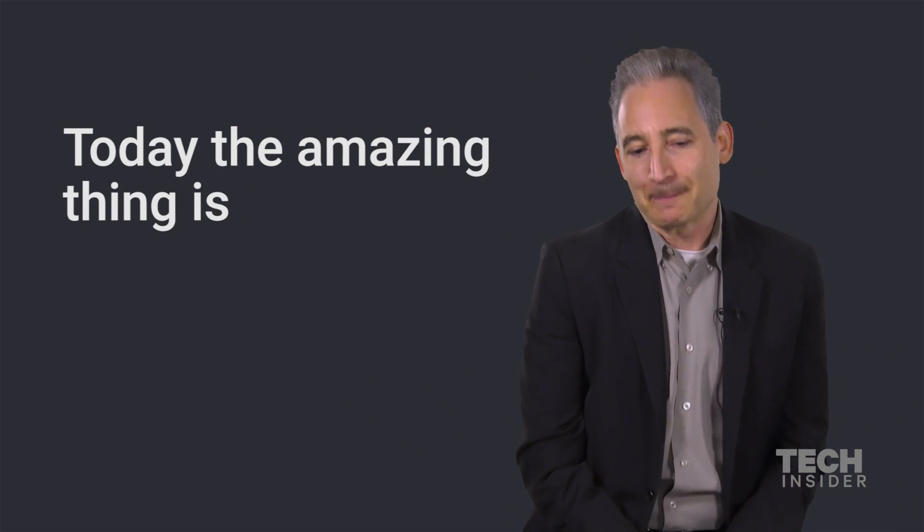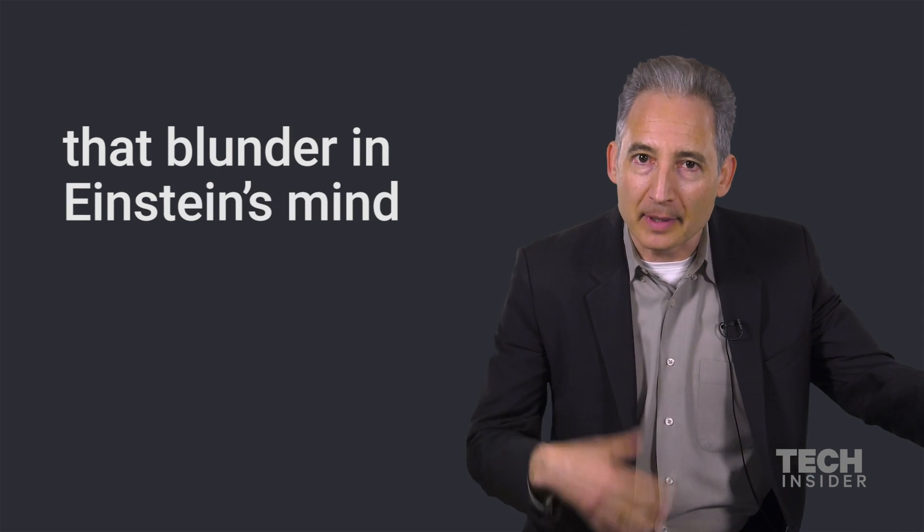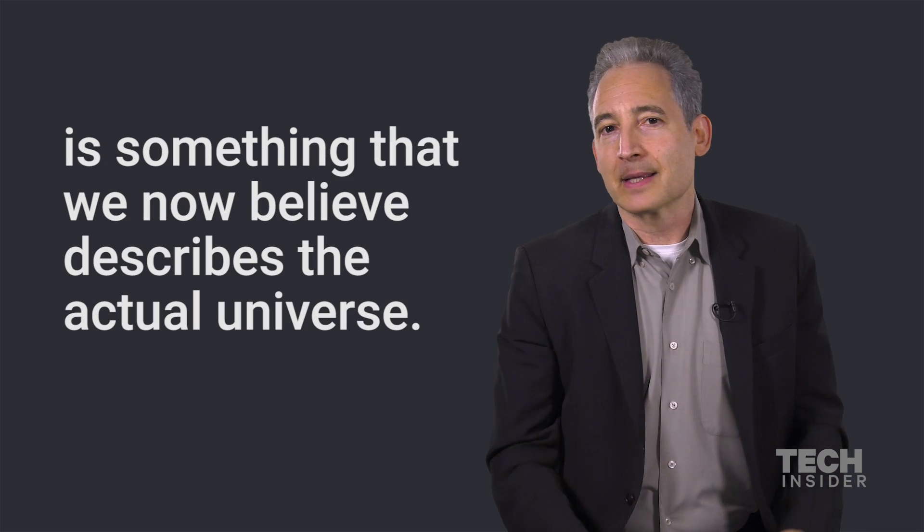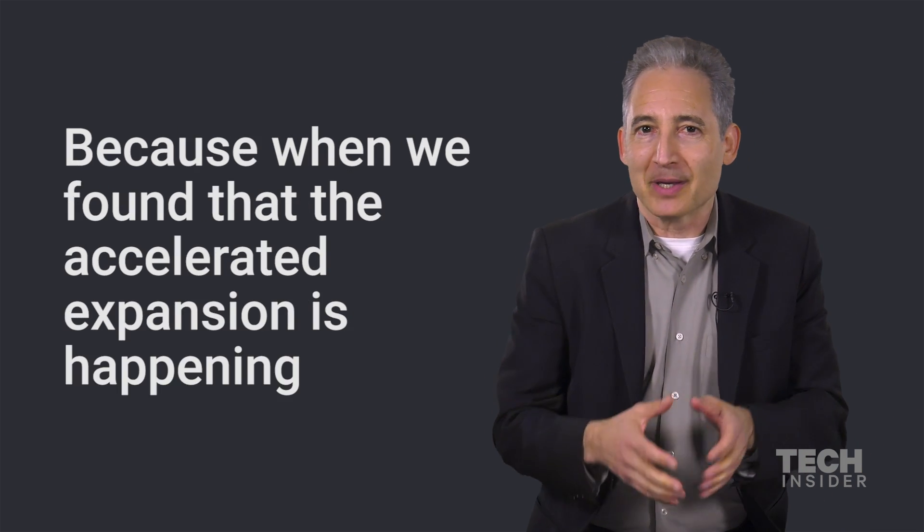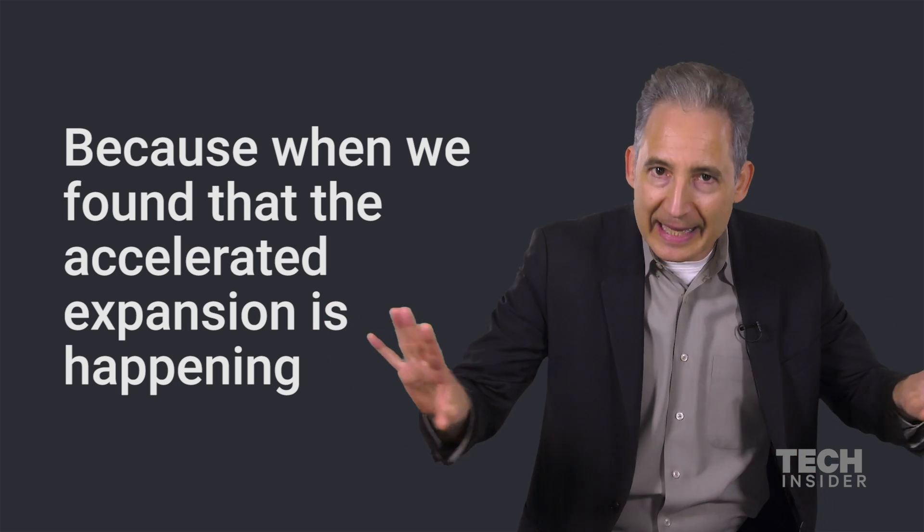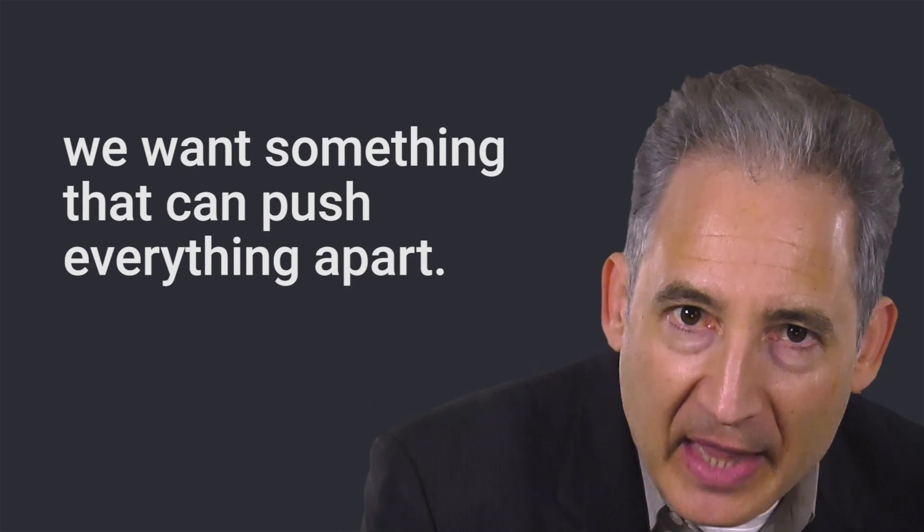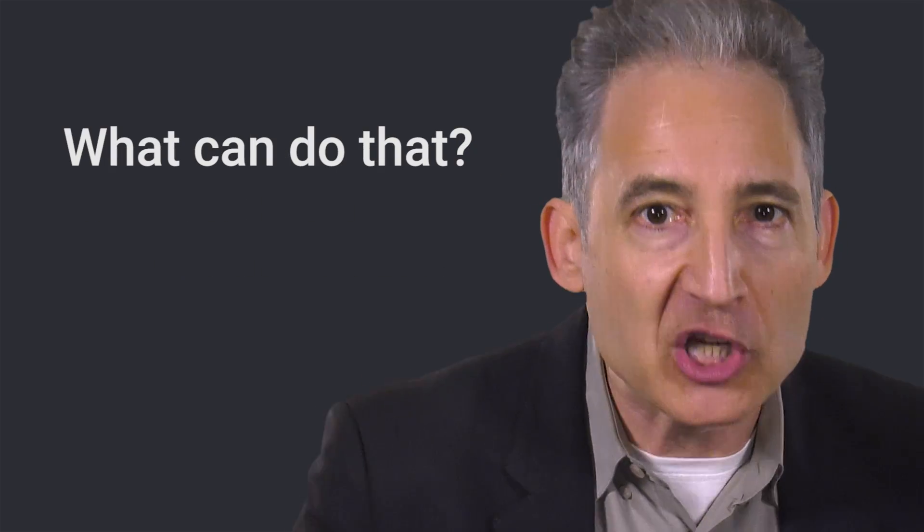Today the amazing thing is that blunder in Einstein's mind is something that we now believe describes the actual universe, because when we found that the accelerated expansion is happening, we want something that can push everything apart. What can do that?